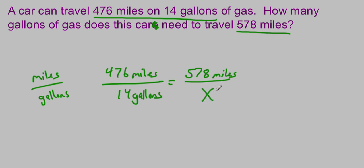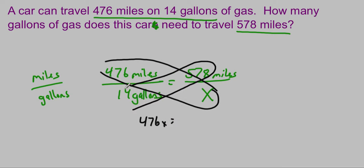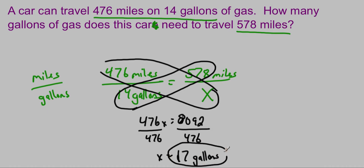So hopefully you're kind of picking up on the pattern here. Multiply along my diagonal. 476 times x is 476x. 578 times 14. I'm going to need my calculator for that one. And I get 8092. This is why we use calculators. Now we solve the equation. They multiply by 476. So I'm going to divide both sides by 476. And x is equal to 17 gallons. But you have to put those units back onto your final answer. You can't just give me a 17. I need to know what units are we measuring. In this case, we're missing how many gallons. So it would be 17 gallons.